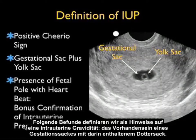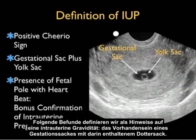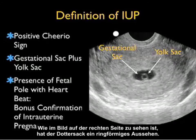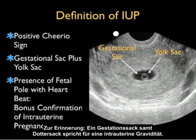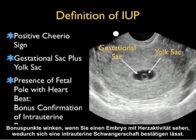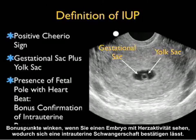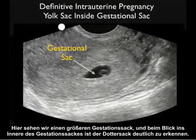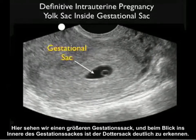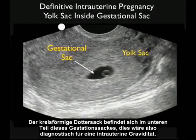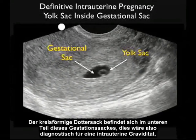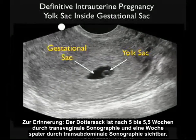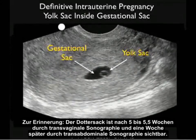The findings we define as indicative of an intrauterine pregnancy are the presence of a gestational sac with a yolk sac inside. The yolk sac has a circular appearance we call the positive cheerio sign. Gestational sac plus yolk sac is indicative of intrauterine pregnancy — though bonus points are given if you see a fetal pole with a heartbeat. Here's a video clip showing a definitive intrauterine pregnancy: a larger gestational sac with the positive yolk sac or cheerio sign visible inside, towards the inferior aspect. This effectively rules out ectopic pregnancy in the vast majority of patients. The yolk sac is seen at about 5 to 5.5 weeks on transvaginal sonography and about a week later on transabdominal sonography.